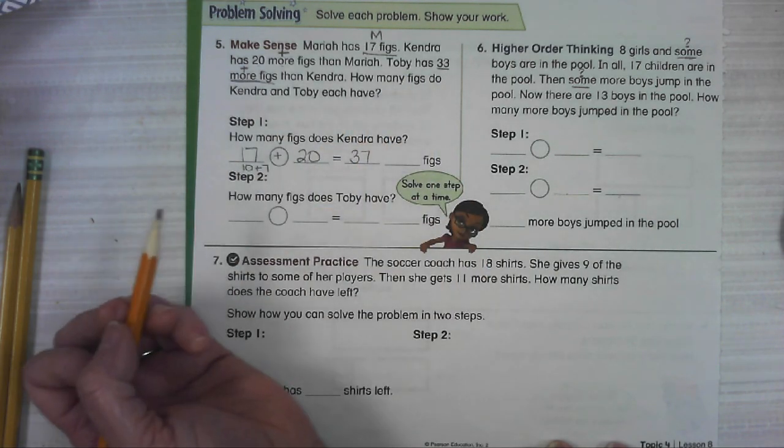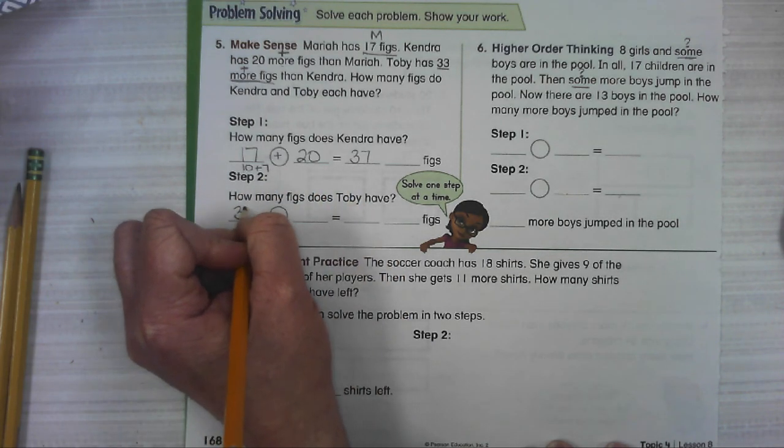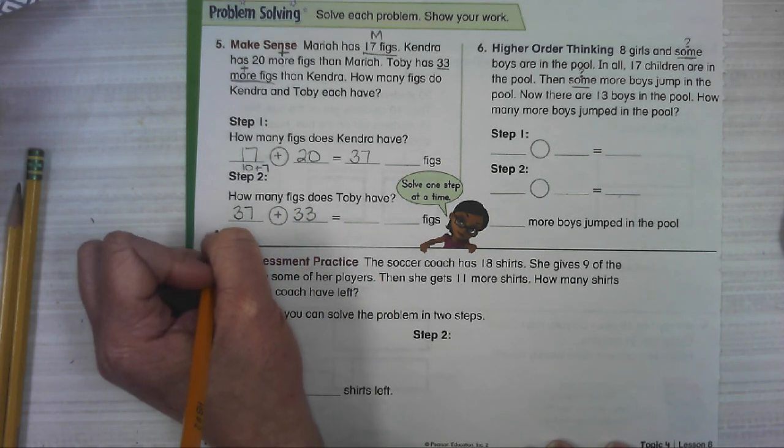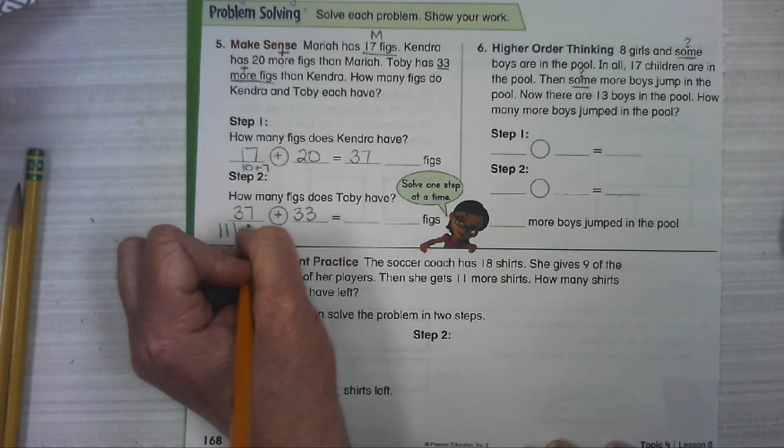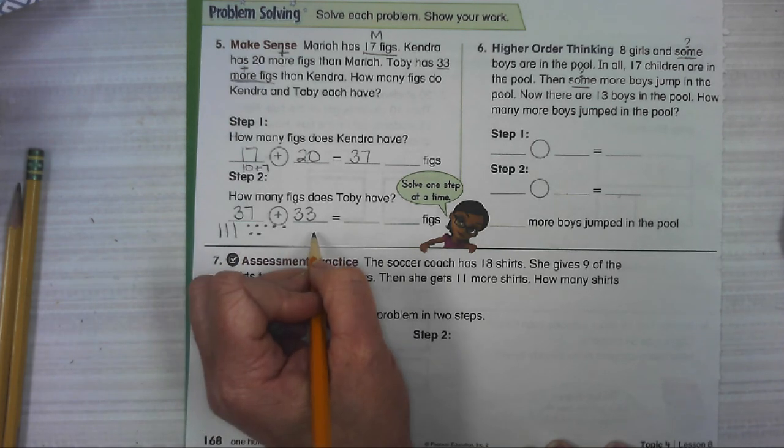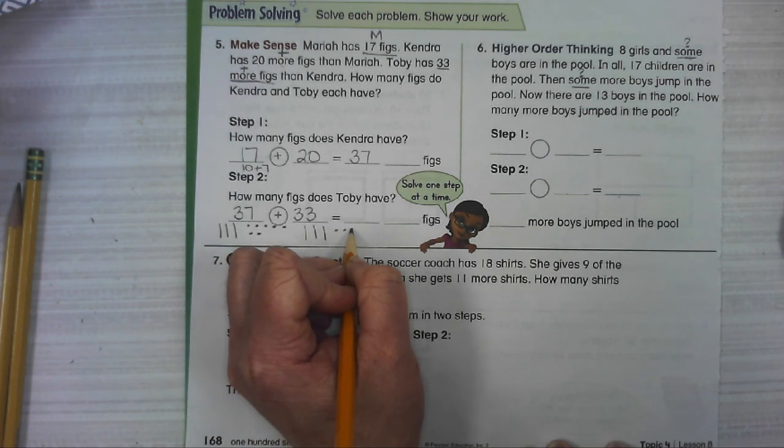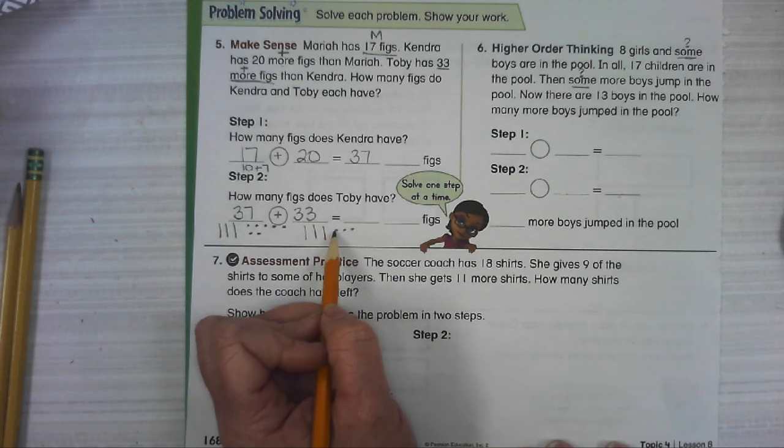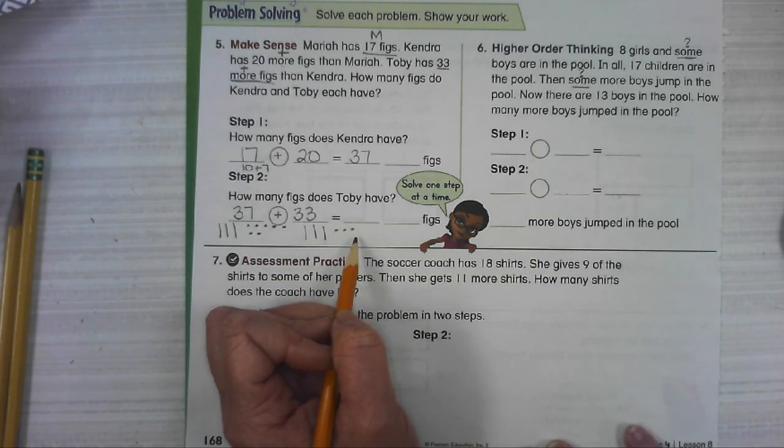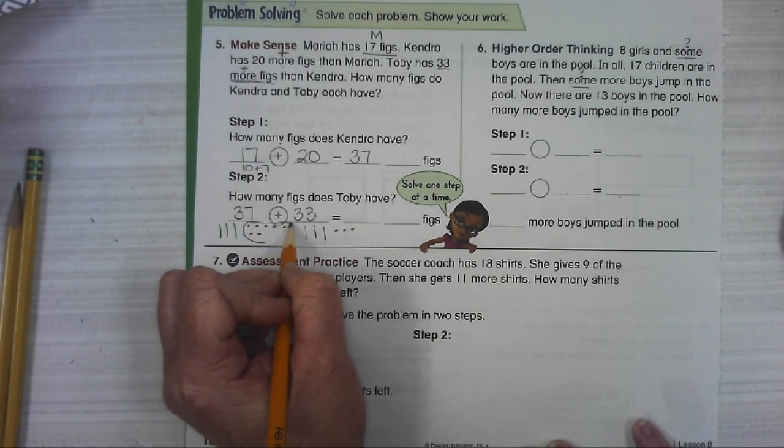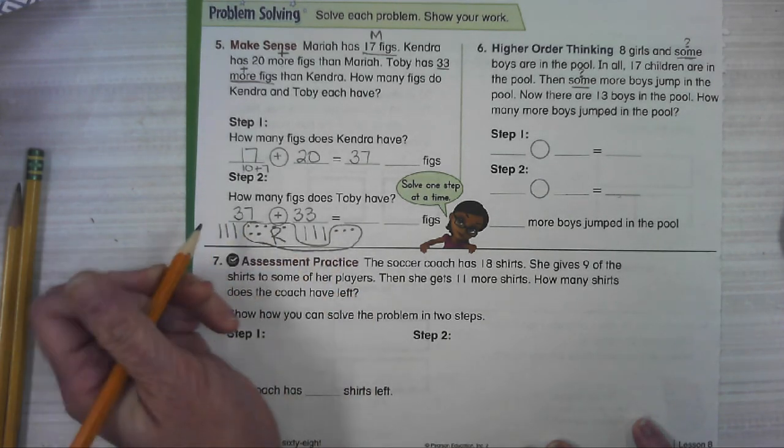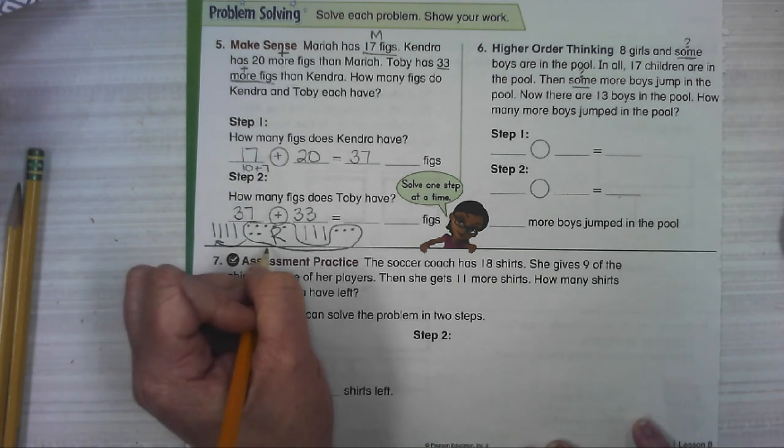Toby has 33 more than Kendra. Well, if Kendra's got 37, Toby has 33 more. Let's see. I think I'm gonna have to put it over here. Okay. I'm counting my ones. I've got seven over here and then one, two, three. Oh, the document camera's not lagging anymore.